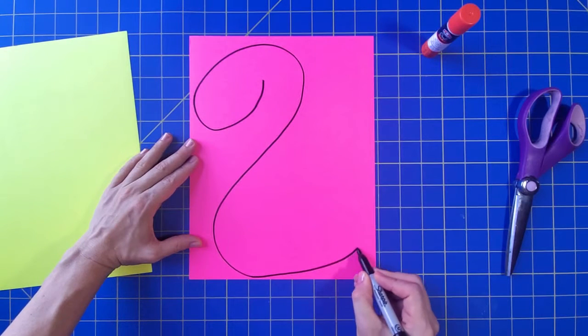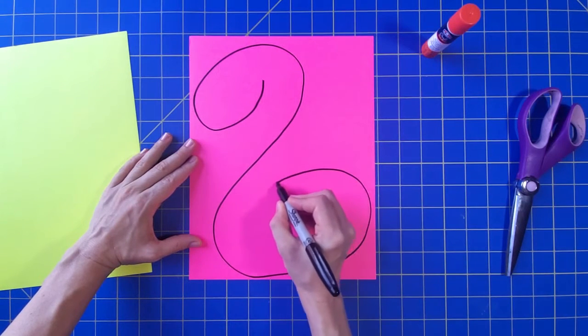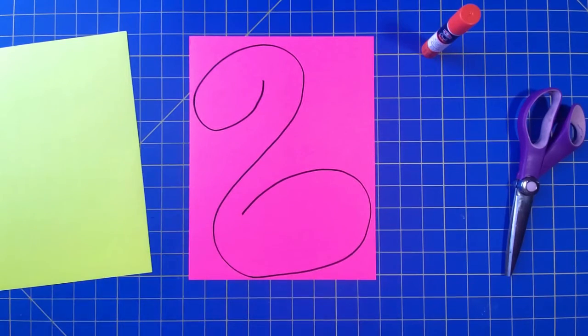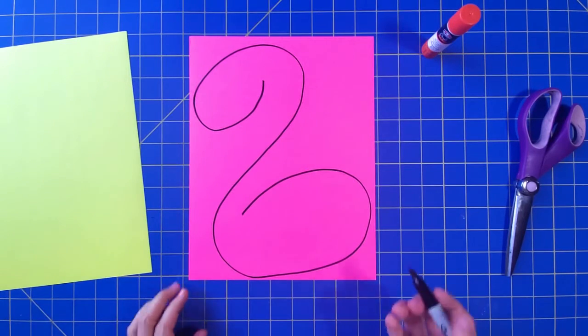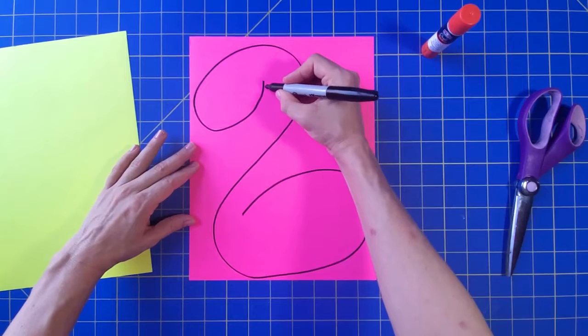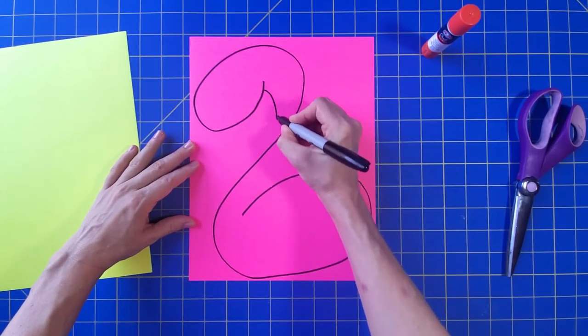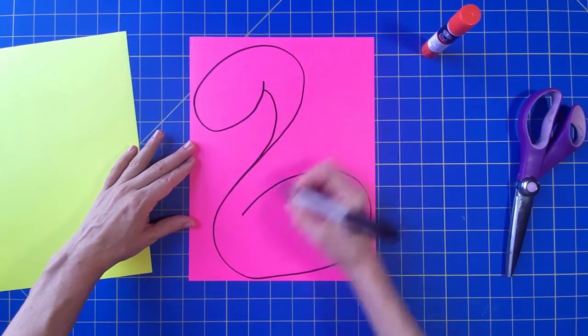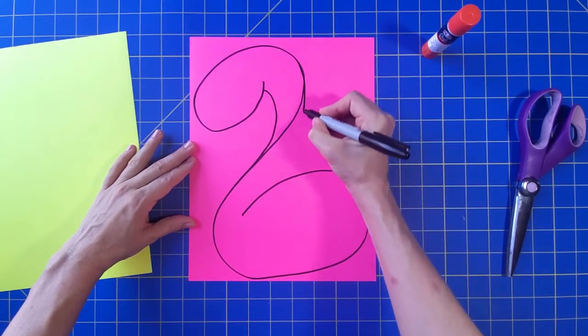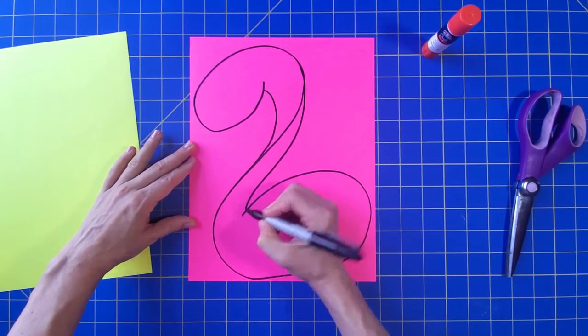We're going to make this a great big oval like that. Now we're going to draw the neck. The neck is going to come down like this and like this. It doesn't matter if your lines aren't perfect because none of this is going to show—this is the back.